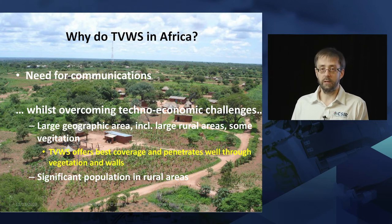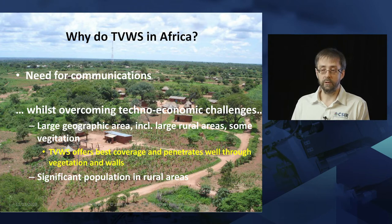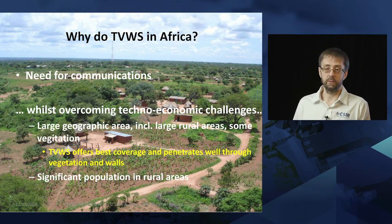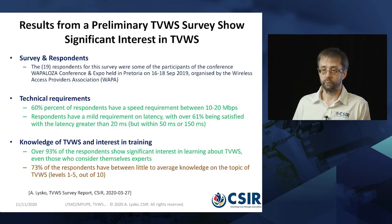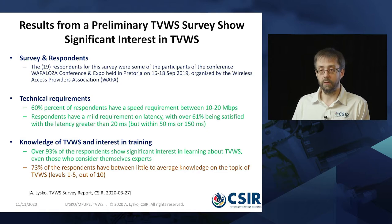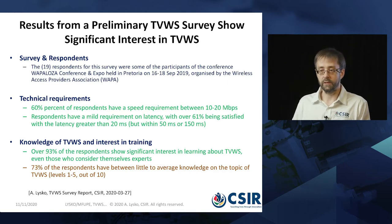Why do TV white space in Africa and South Africa? Because we need communications, and TV white space offers the best coverage — it penetrates well through vegetation and walls, suiting our geographical conditions well. Also, TV white space can serve a significant portion of our population. We did a short survey and found that 93% of SMMEs showed significant interest in learning about TV white space, while 73% considered themselves as not very knowledgeable or at a medium level of understanding.